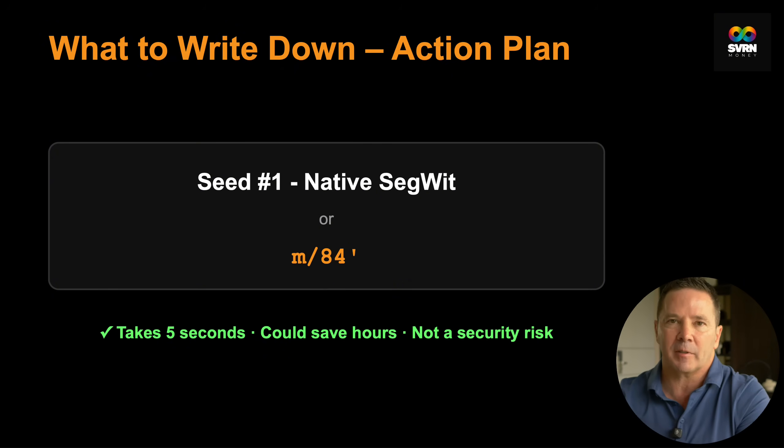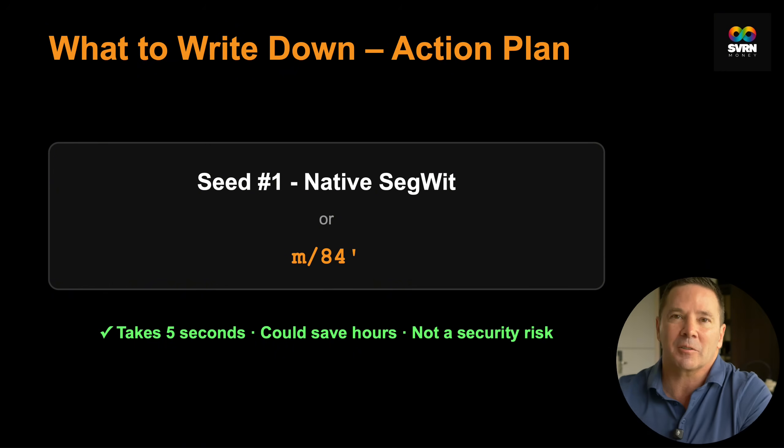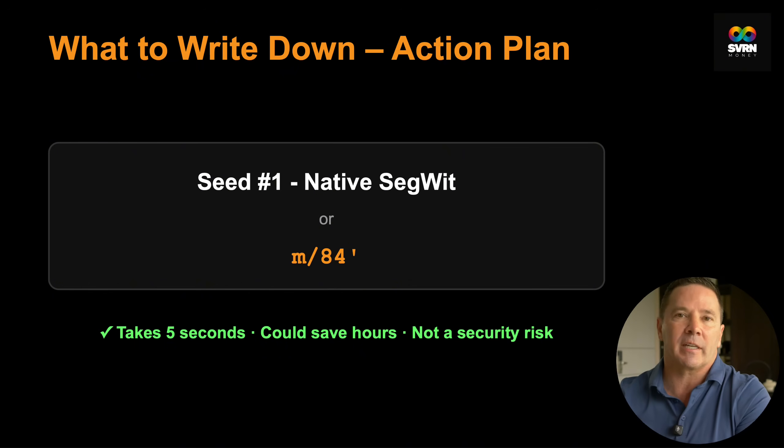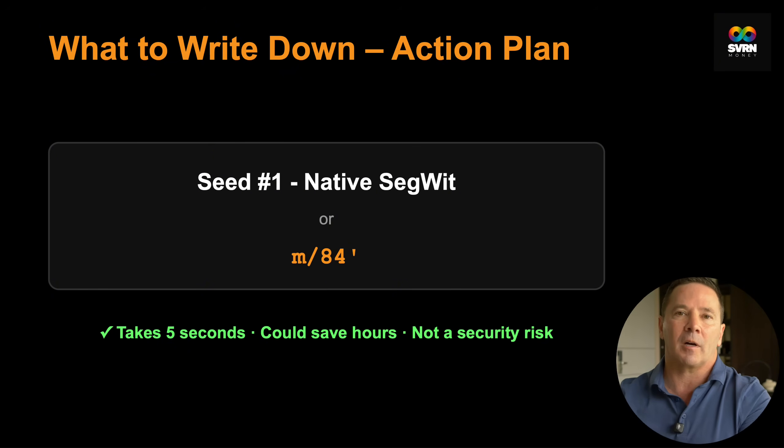If you're serious about passing Bitcoin on to your family someday, this is even more critical. Your spouse and kids won't know the difference between Legacy, Native SegWit, and Taproot. They'll have your seed phrase but no idea which derivation path to follow. Writing down M/84 or 'native SegWit' next to the seed phrase could be the difference between them recovering all your funds or thinking the wallet is empty. Some people worry this is a security risk — it's not. The derivation path without the seed phrase is completely useless.